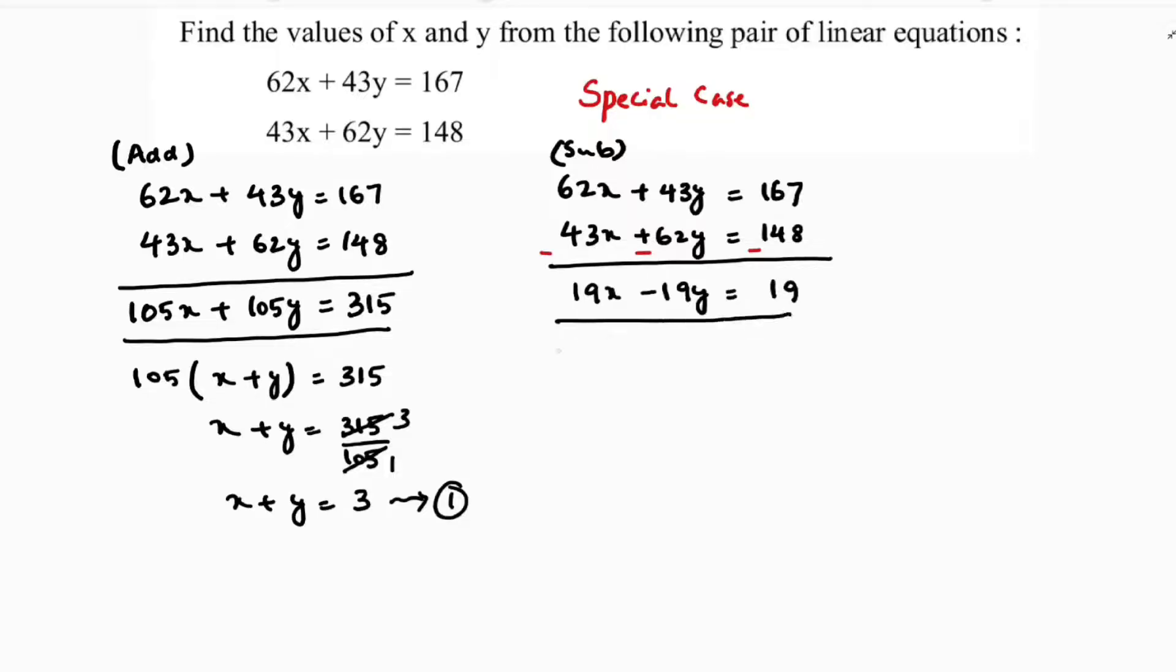So here if I take 19 common, x minus y is 19. If I transpose this 19 here, x minus y value is 1. This is equation 2.